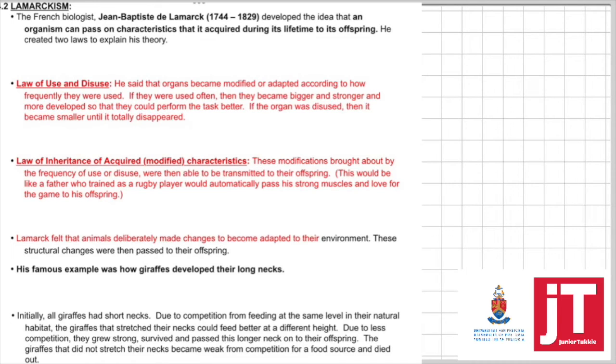He says the modifications are brought about by the law of use and disuse, so this characteristic then becomes acquired and you can pass on this characteristic onto your offspring. It's like the example we have here: rugby players. A father who trained as a rugby player has strong muscles. Because he trained a lot and used his muscles, the muscle became bigger and he'll pass on these muscles to his child.